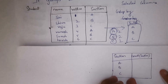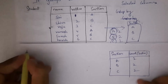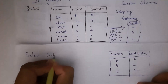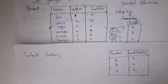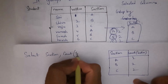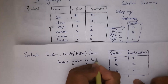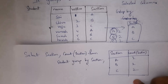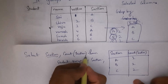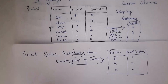Now I want to see sections along with the number of times each section is repeated. For that I write: SELECT section, COUNT(section) FROM student GROUP BY section. When I run this code it will display two columns — the section column and the count of each section — showing how many times each section value appears, grouped by section.